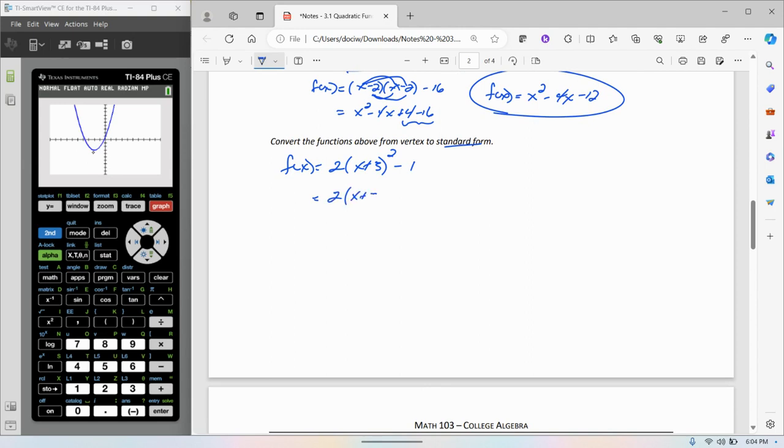I have x plus 3 squared, so it's x plus 3 times x plus 3. x times x is x squared. x times 3 is 3x. 3 times x is another 3x, that's a total of 6x. 3 times 3 is 9.